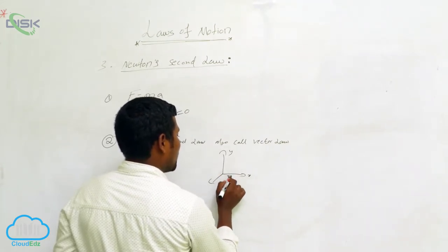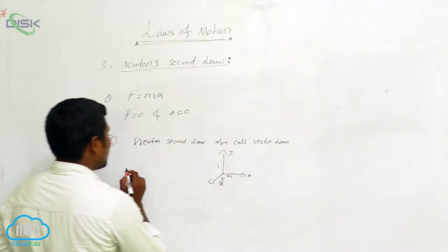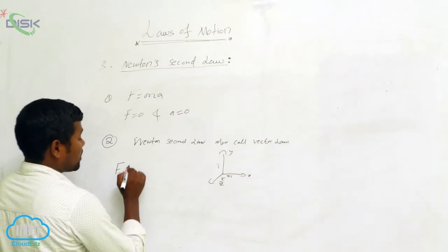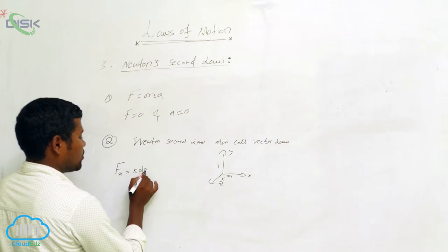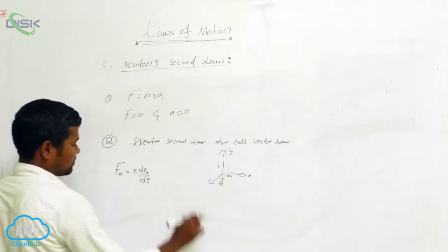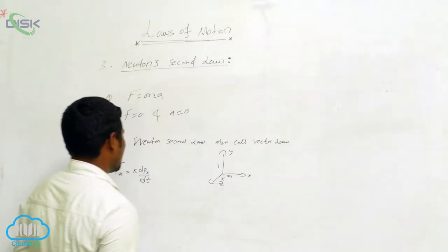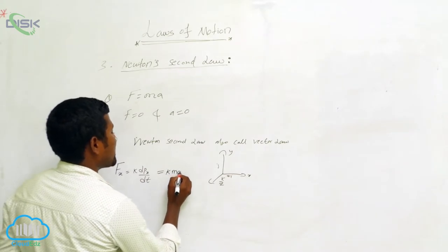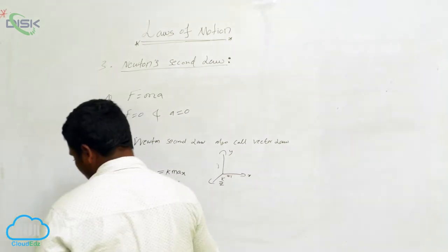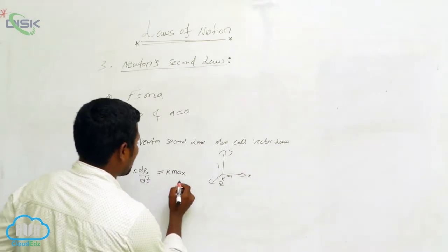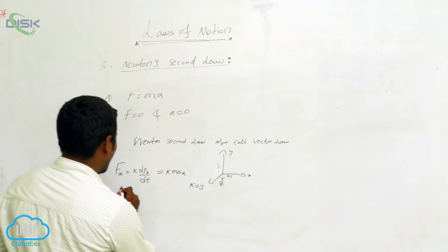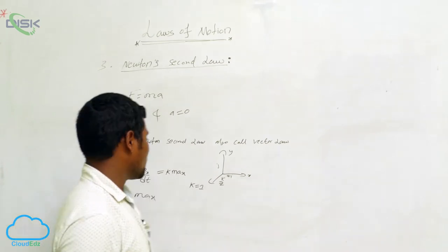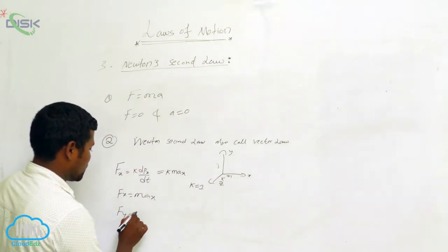In vector form, we use unit vectors i, j, and k. The force in the x-direction can be written as Fx = k × (dpx/dt). Since k = 1, this simplifies to Fx = m·ax. Similarly, Fy = m·ay in the y-direction.